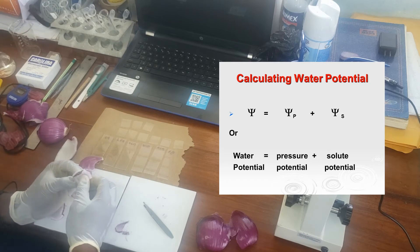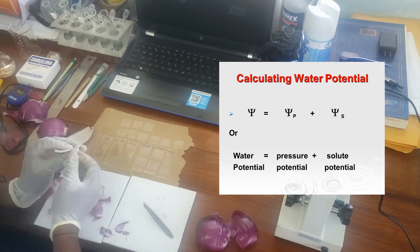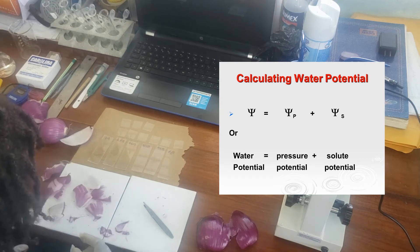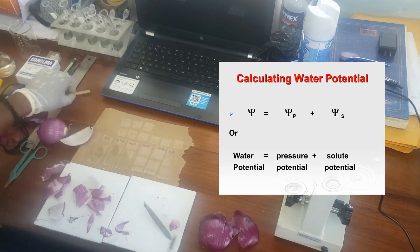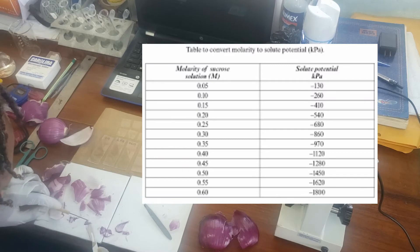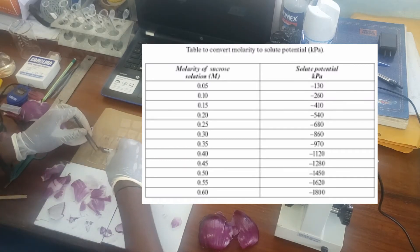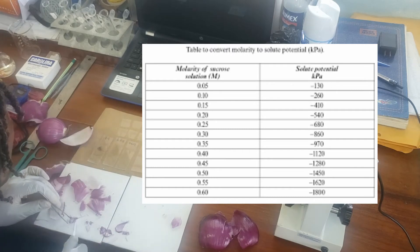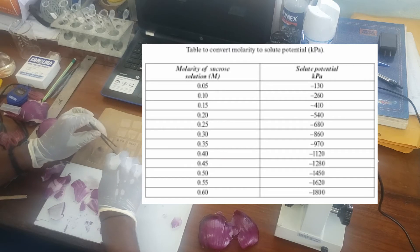Secondly, the solute potential is determined by the concentration of solute inside the solution which the cell is submerged in. So for example, using sucrose, the solution has a highly negative solute potential. Pure water itself would have a solute potential of zero. So as the concentration of the solute inside the solution increases, the solute potential decreases or becomes more negative as you can see in the table.